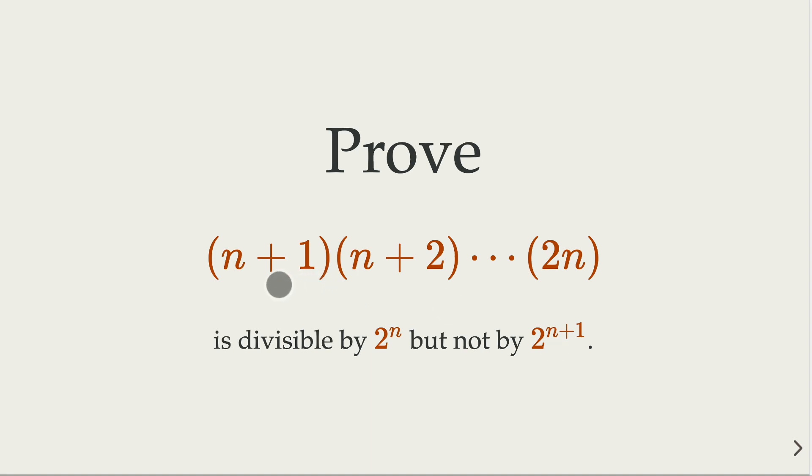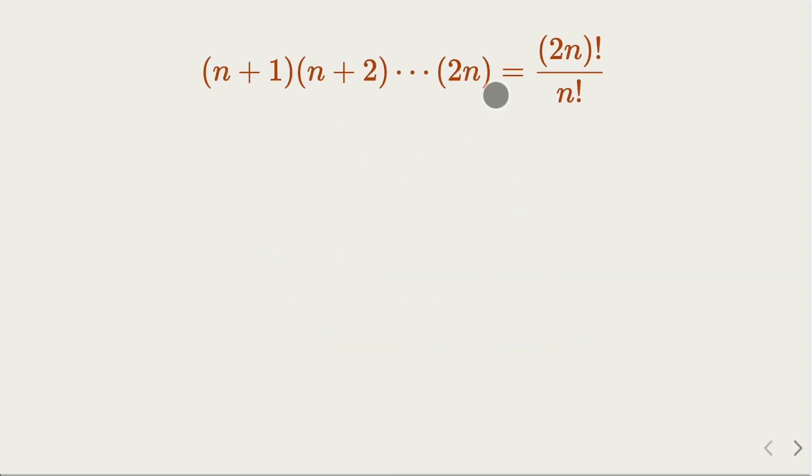Now here we can use simple algebra for the proof that the product is n consecutive integers. So you can rewrite it as 2n factorial divided by n factorial because the missing term here is 1 up to n, that's n factorial.